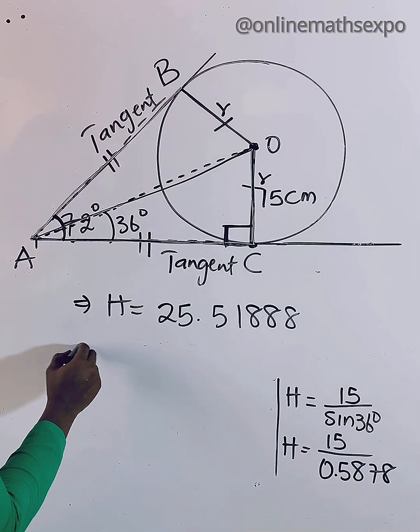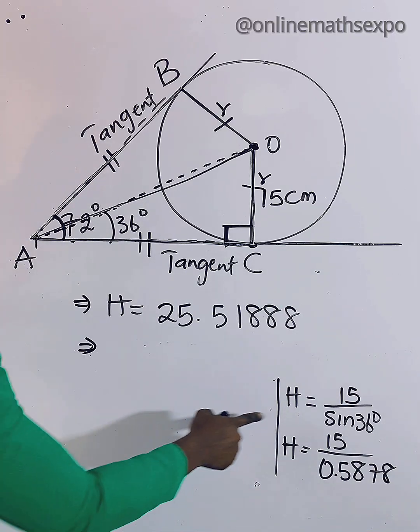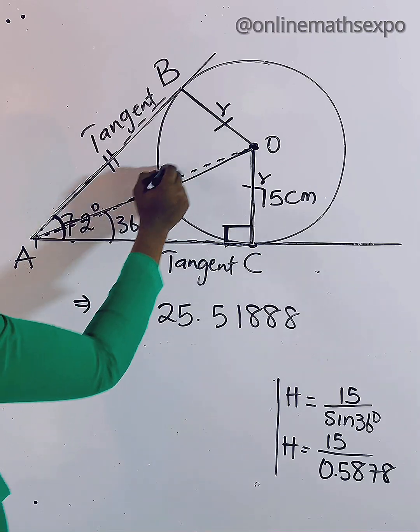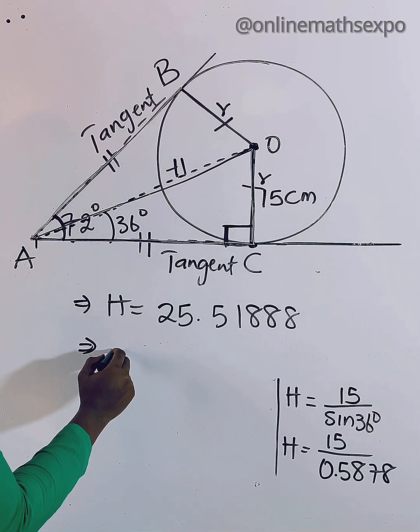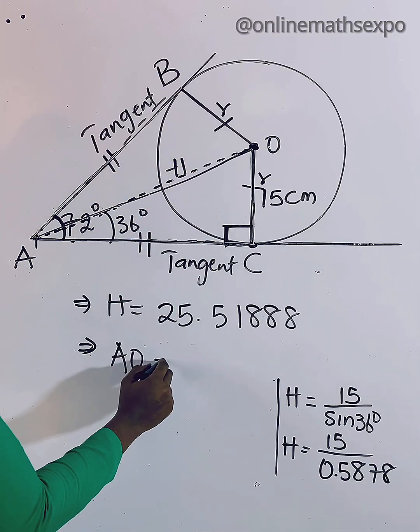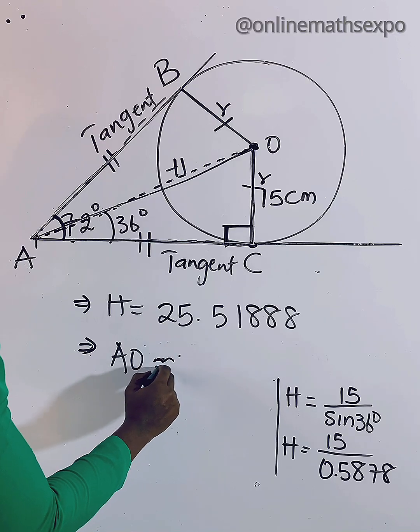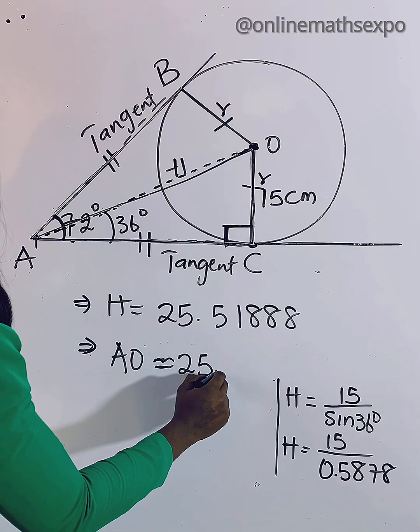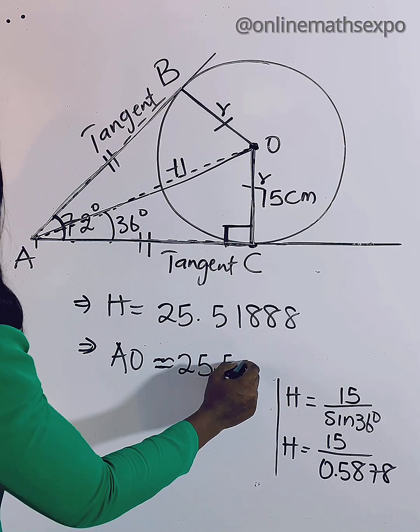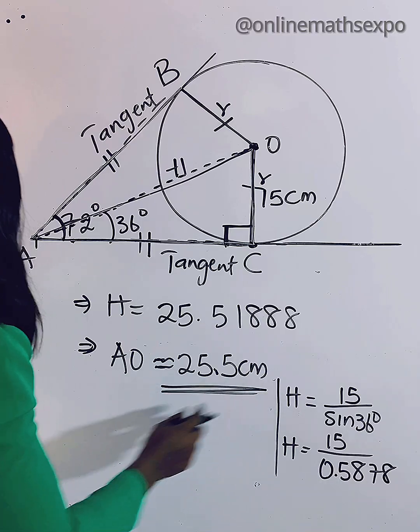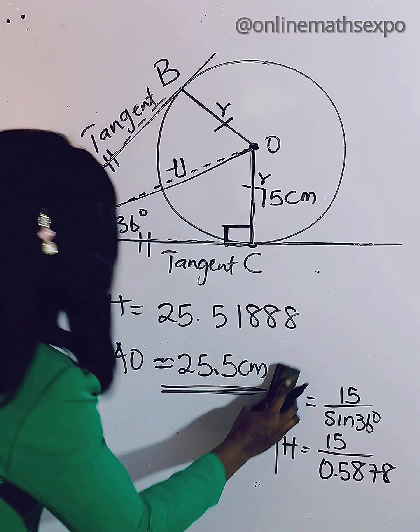Now we are asked to approximate to one decimal place. Remember our H is this side, so it means that length AO is going to give us approximately 25.5 centimeters to one decimal place.